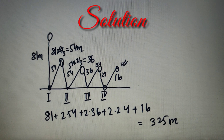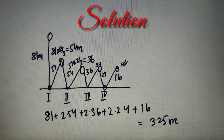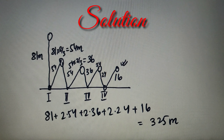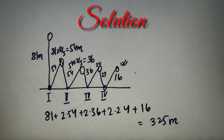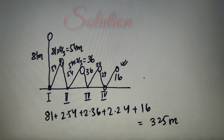Now we could have used a formula, but to understand the concept of this problem we used manual calculation. When we have to calculate over more bounces or if the question is more complicated, we can use the formula or solve it manually as well. Let's move on to Part B of the question.